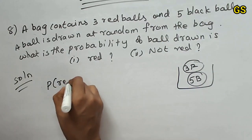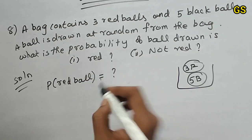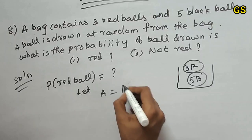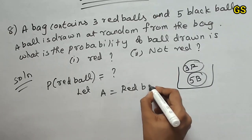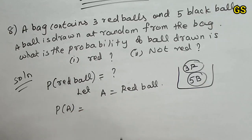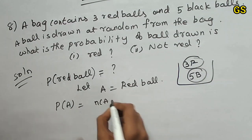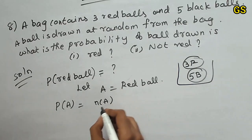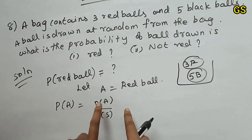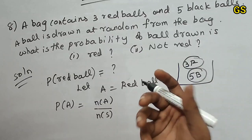We need to find the probability of a red ball. Let A be the event of drawing a red ball. The formula is P of A equals N of A by N of S, where N of A is the number of favorable outcomes and N of S is the sample space, which is the total number of possible outcomes.